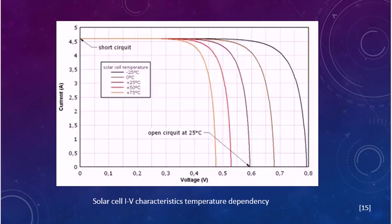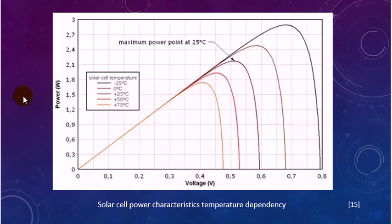This is the solar cell IV characteristics temperature dependency. If the temperature increases in the cell, the current decreases and the power will decrease also. This picture shows solar cell power characteristics for temperature dependency, which depends on increasing or decreasing temperature.